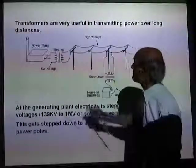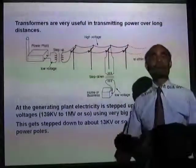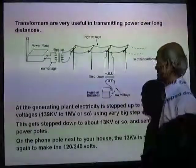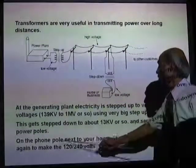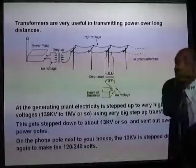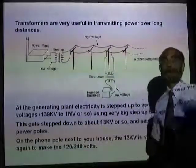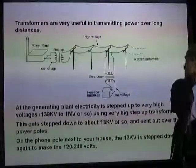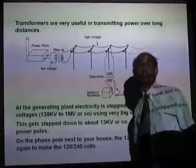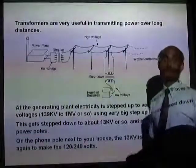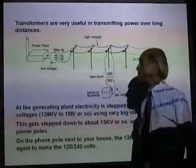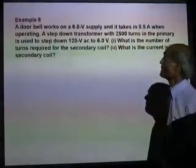Outside your house there is always a step-down transformer which steps down that 4,000 volts to 120 volts so that you can use it. On the phone pole next to your home, the line is actually 13 kilovolts, which is stepped down to 120 or 240 volts — both outputs are available from your transformer. These are all very important applications of electromagnetic induction. Let's do a problem.